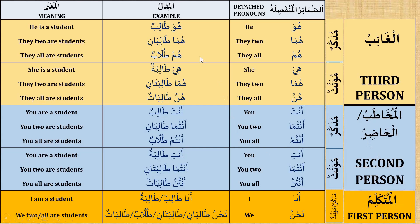Now let's use them in a sentence. They two are students; they all are students. She is a student; they two are students; they all are students. As we see, there are two forms for 'they two,' but in a sentence when used with a noun, the noun must agree in masculine and feminine gender.